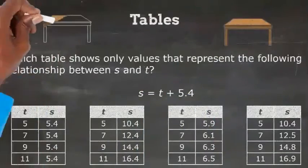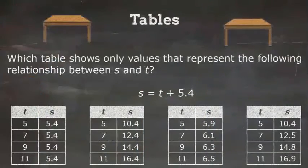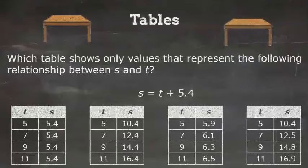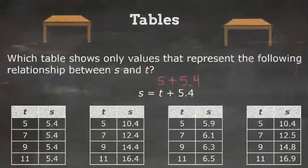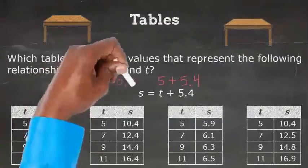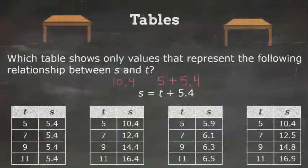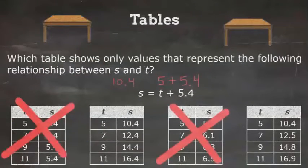Now, let's look at a problem using table representation. Which table shows only values that represent the following relationship between s and t, where s equals t plus 5.4? We need to find which table contains a list of possible values. Let's take the first value, 5, on the table. If we plug it in for t, we get 5 plus 5.4, and that equals 10.4. That narrows it down to these two answer choices.